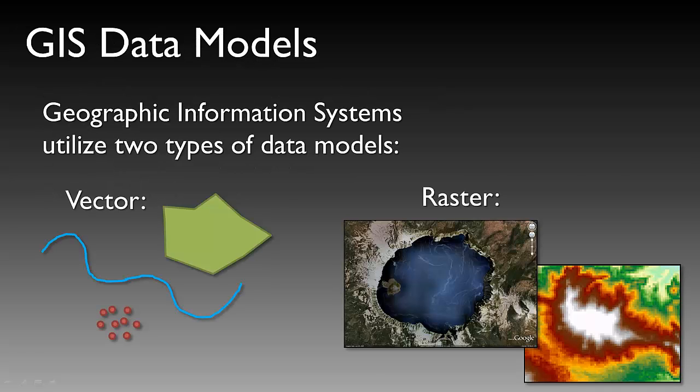All of these different types of GIS data are represented through GIS data models. GIS data models come in two types generally speaking: we have what we call vector data, or points, lines, and polygons, and we have raster data.